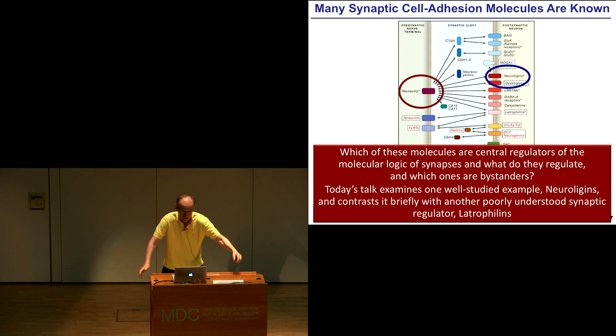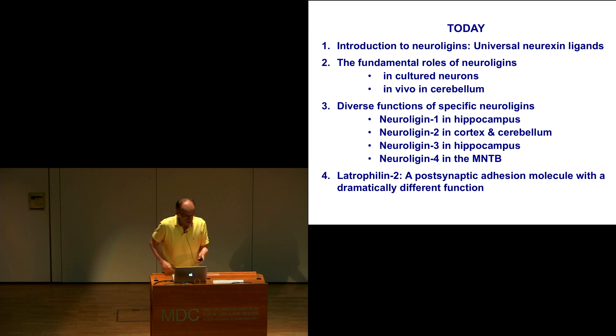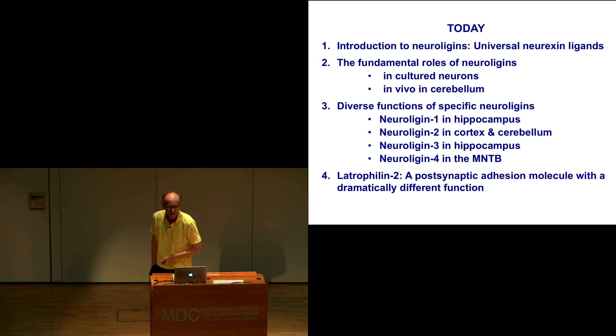I'm not going to try to give you a grand summary here because I don't have any. Instead, I'm going to focus on just two families of proteins — specifically I'm going to focus most of my talk on neuroligins, which were discovered as postsynaptic ligands of neurexins some years ago. And I'm also going to tell you at the end a little story about latrophilins to show you the diversity of interactions and the diversity of mechanisms that exist.